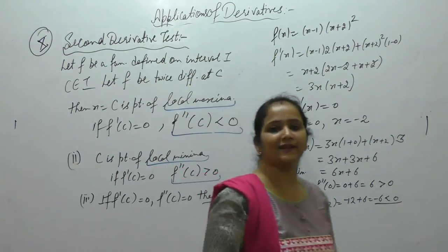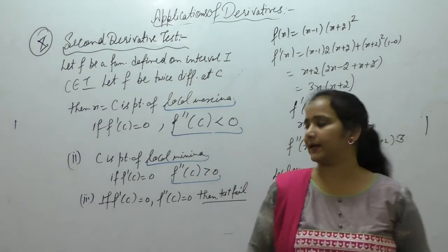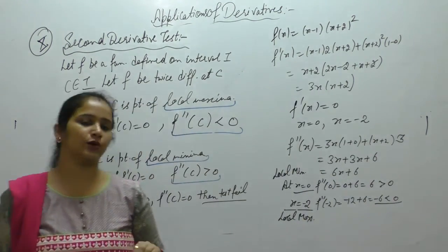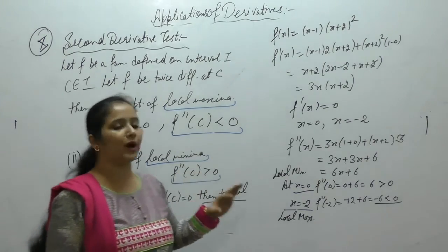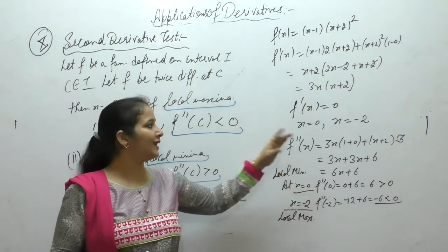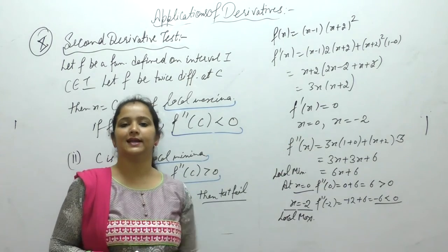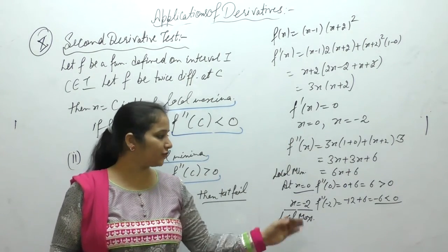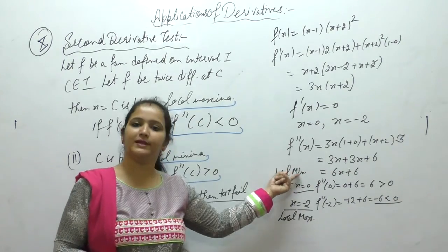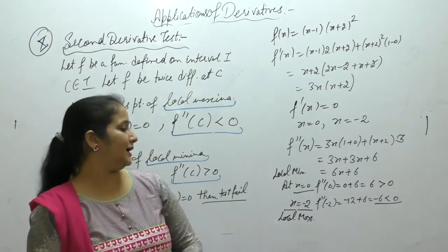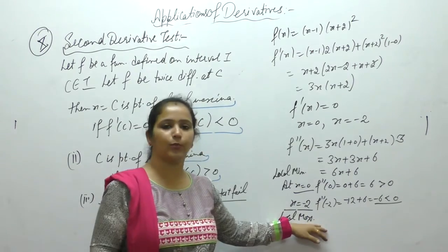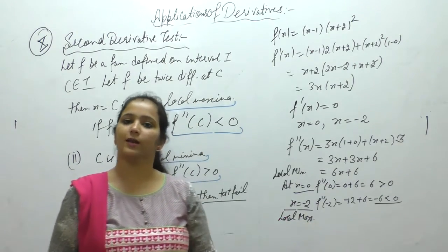To summarize the second derivative test: find the critical points by setting f'(x) = 0. Substitute those points into f''(x). If f''(x) > 0, it is a point of local minima; if f''(x) < 0, it is a point of local maxima.